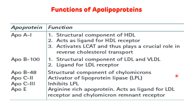Among the three ApoE isoforms, ApoE3 is the most common. Individuals carrying two ApoE4 alleles are most prone to developing Alzheimer's disease, while individuals carrying two ApoE2 alleles are more prone to developing type 3 hyperlipoproteinemia.